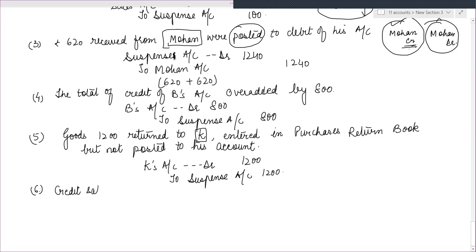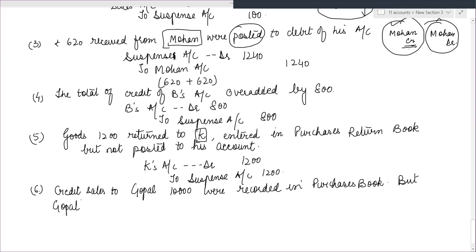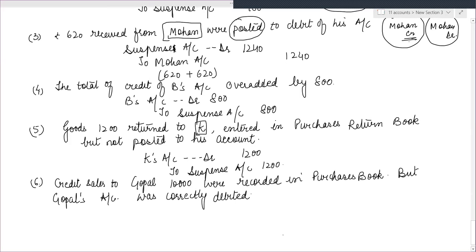Next: Credit sales to Gopal for Rs. 10,000 were recorded in the purchases book, but Gopal's account was correctly debited. Since Gopal's account is correctly entered, there will be no rectification needed for Gopal's side.